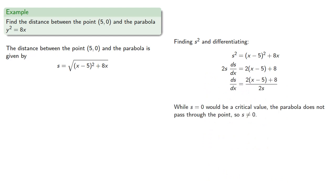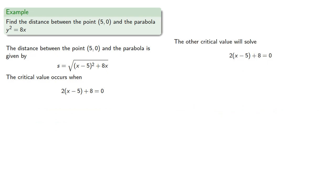While s equals 0 would be a critical value, the parabola does not pass through the point, so s could never be 0. And so the only critical value will occur when the numerator is 0. So the other critical value will be the solution to 2(x - 5) + 8 = 0, which is x = 1.